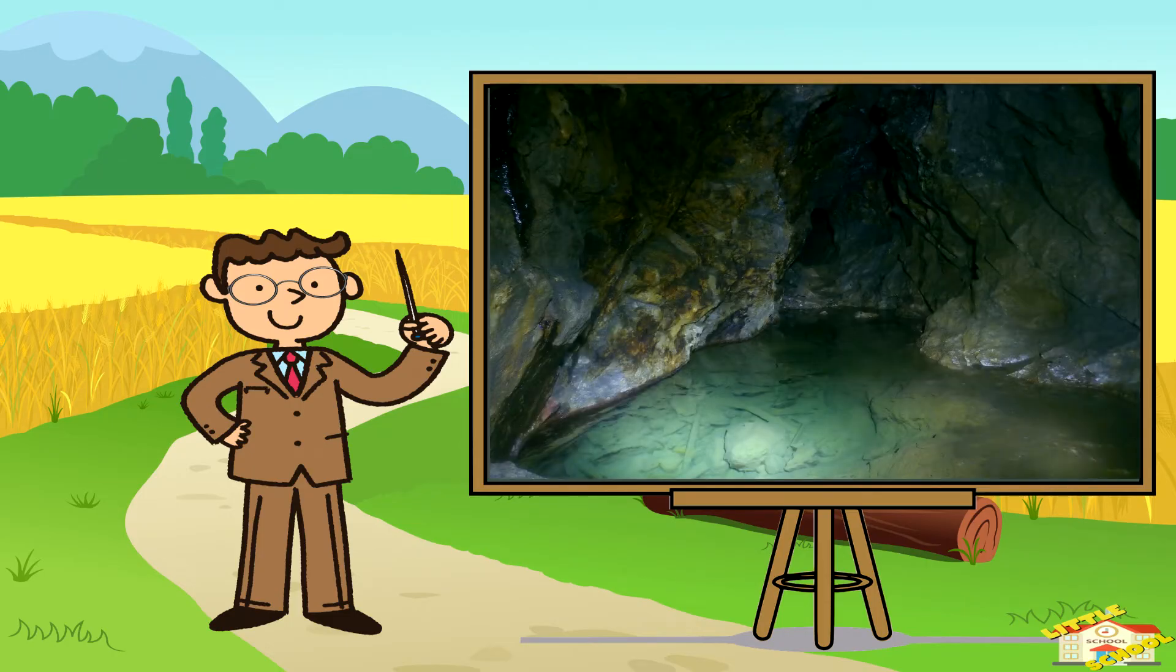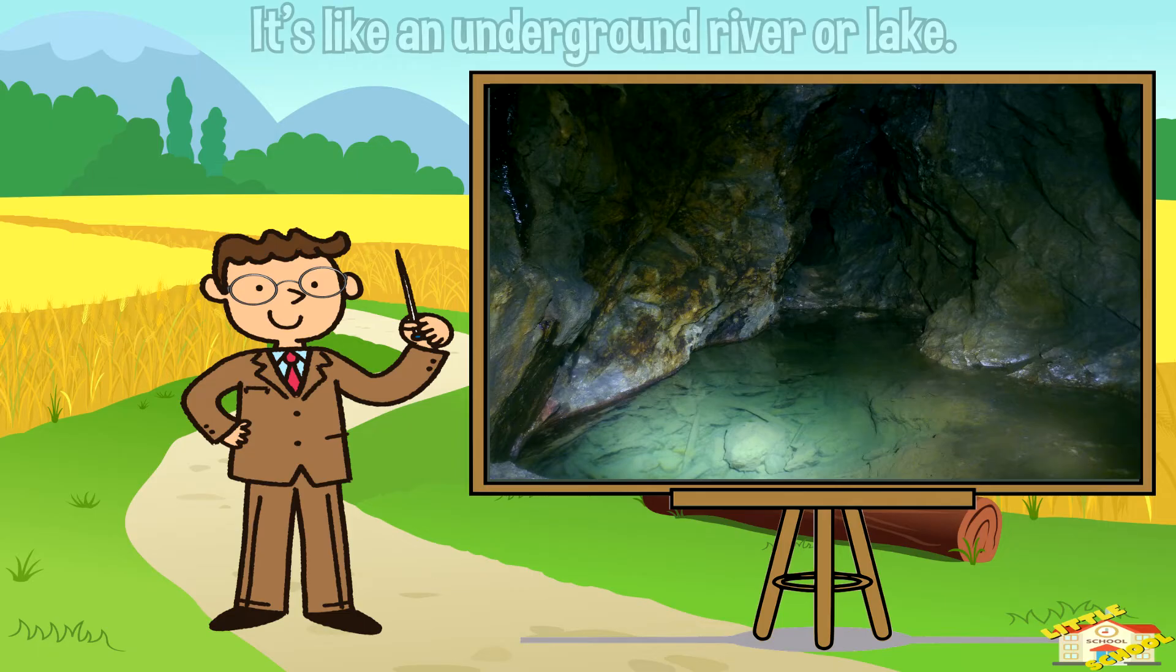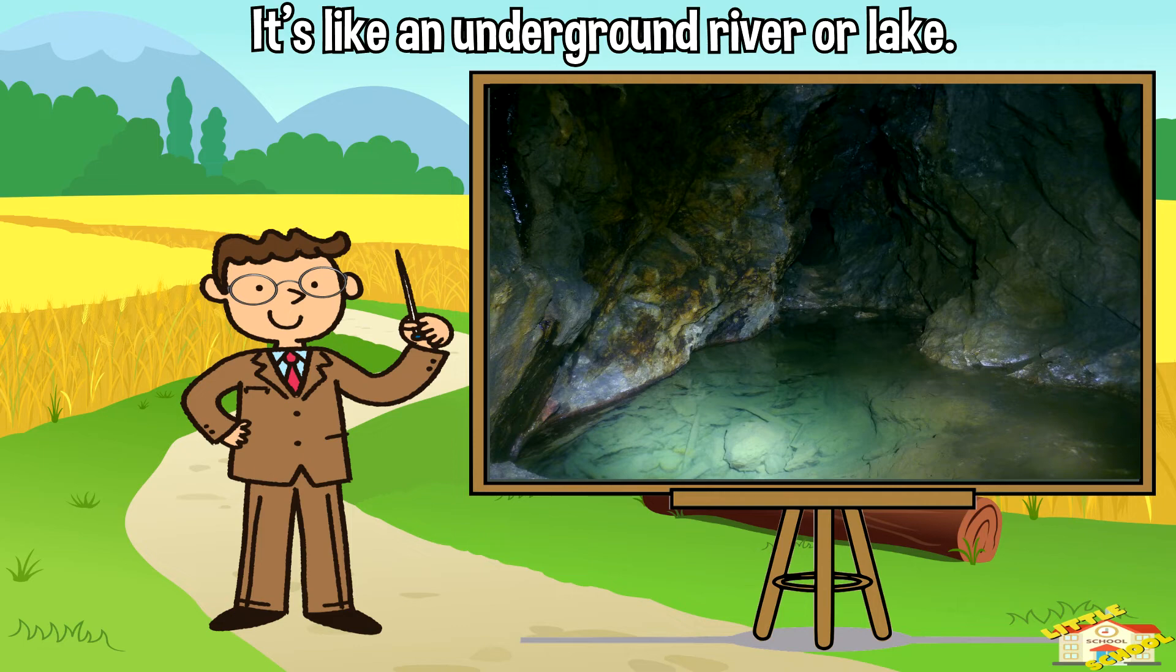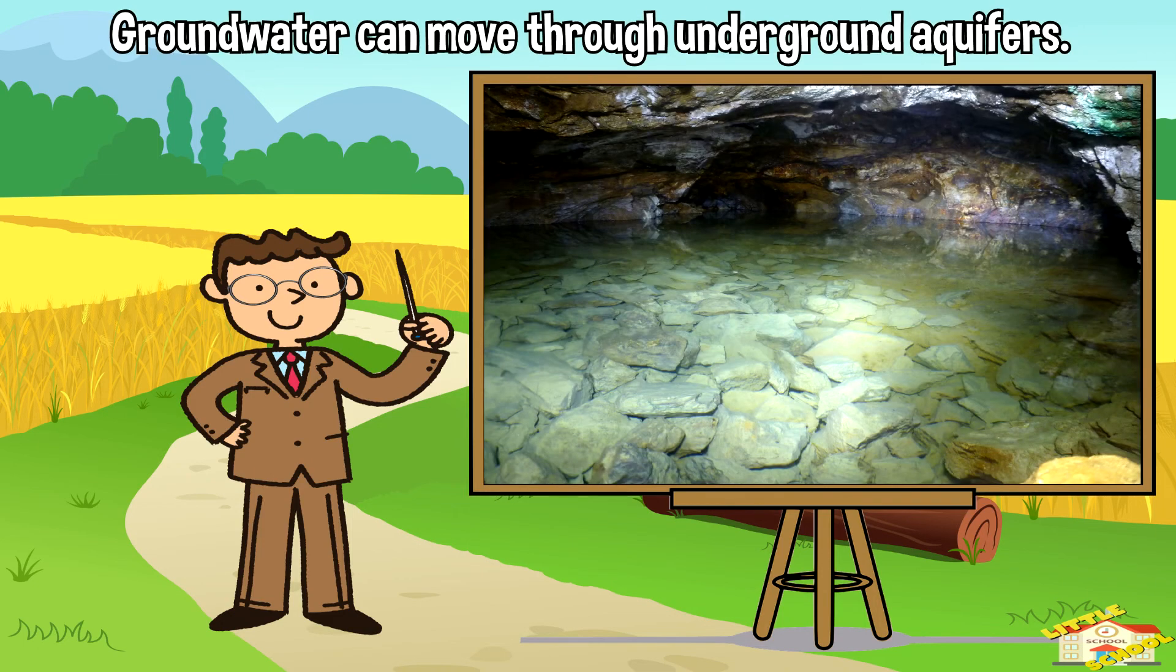Groundwater is a reservoir of water stored beneath the Earth's surface in spaces between rocks and soil particles. It's like an underground river or lake. Groundwater can move through underground aquifers, which are layers of rock or sediment that can hold and transmit water.